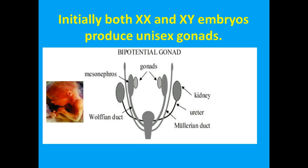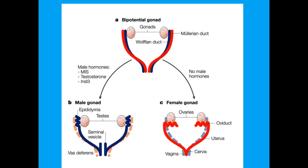The reason why men have nipples is that every fetus starts off as bipotential — in other words, it could develop into a male or a female. Unless the Y chromosome is present, it will develop into a female. The presence of the Y chromosome instructs the body to produce androgens, which are male sex hormones. With these sex hormones, the gonads develop into testes, and without the hormones, they develop into ovaries.